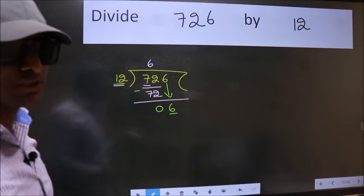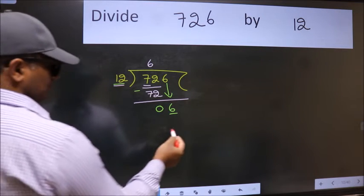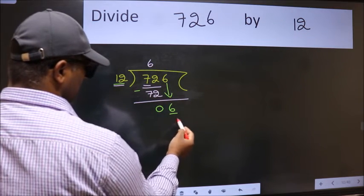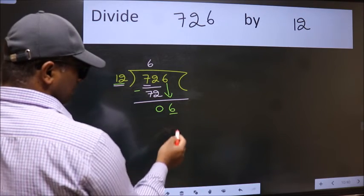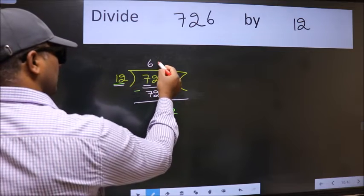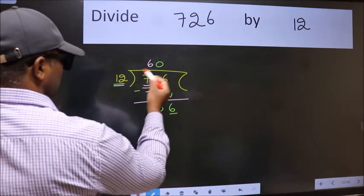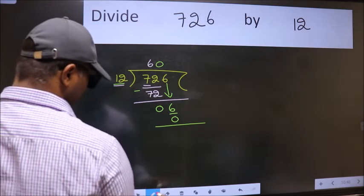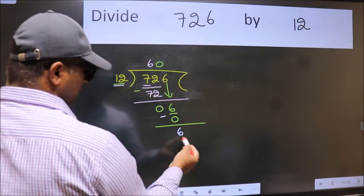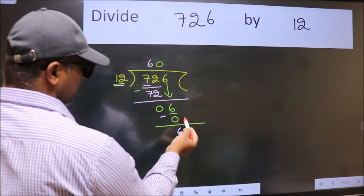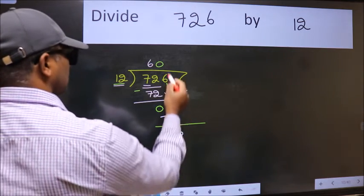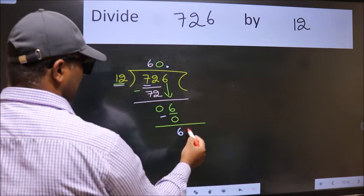Instead of that, what we should think of doing is: which number should we take here? If I take 1, we will get 12, but 12 is larger than 6. So what we do is we take 0 here. 12 into 0 is 0. Now we subtract — we get 6. Over here we did not bring any number down, and 6 is smaller than 12.